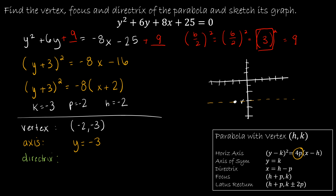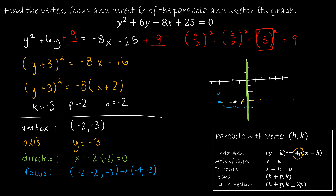The directrix is also a line: x = h − p = −2 − (−2) = 0. That's this line right here at x = 0. The directrix is the same distance from the vertex as the focus. The focus is (h + p, k) = (−2 + (−2), −3) = (−4, −3). The vertex is the same distance from the focus and the directrix.